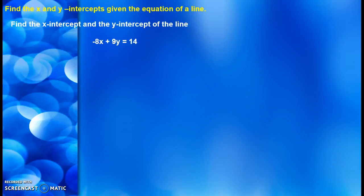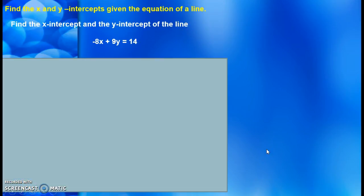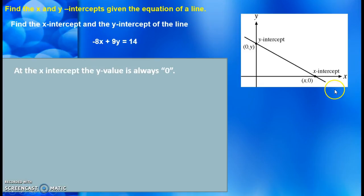In the next question, we have to find the x-intercept and the y-intercept from the equation. Now, think about the line. At the x-intercept, y is always equal to zero.